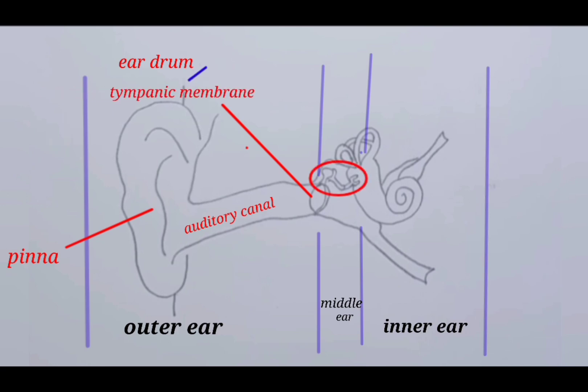The middle ear contains three movable tiny bones: hammer, anvil, and stirrup. They collectively form the ossicles. The tympanic membrane separates the outer ear from the middle ear. The inner ear contains a snail-like spiral organ which is called the cochlea, three semicircular canals, and the Eustachian tube.